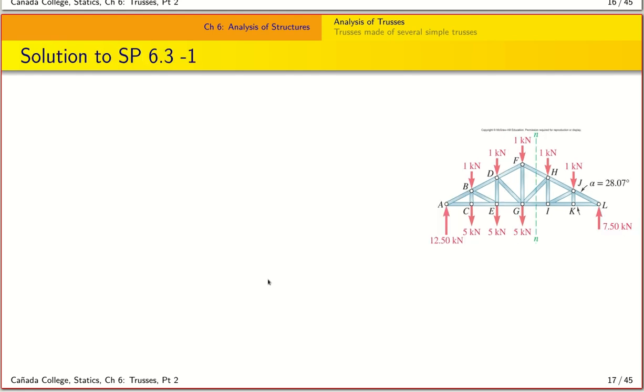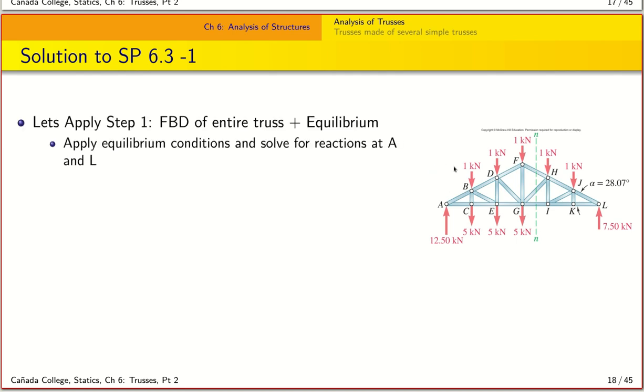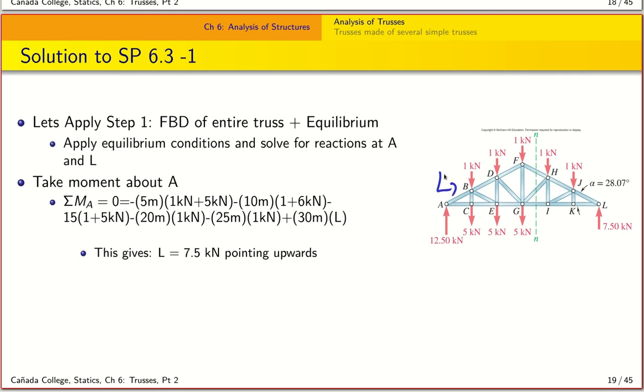Let's look at step one, which is the free body of the entire truss. We know that force is along the x and the y direction, so we can find the moment about A because we have two unknowns. Applying moment about A, we find L is 7.5 kilonewtons. You can see the first term here corresponds to the fact that I have this one kilonewton load, and that gives me my first moment, and likewise all the other terms.